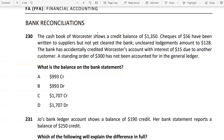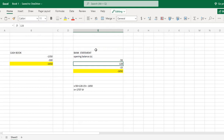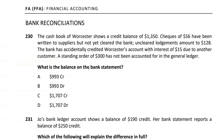The bank has accidentally credited the Worcester account with interest from a donor subscription belonging to another customer. This is a bank error, so we will get a debit to correct it. Then, the standing order of $300 is a monthly credit that is due for the next five-month period and has not yet been recorded.